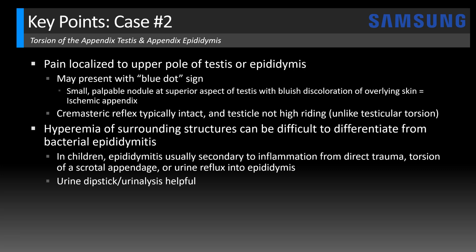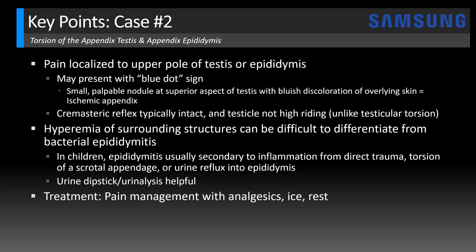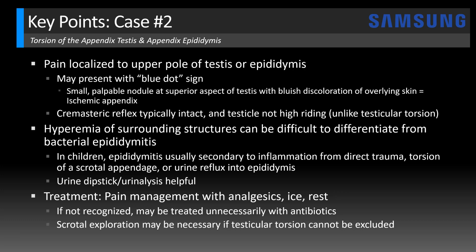A urine dipstick and urinalysis is helpful to differentiate — in both of these cases, both patients had negative urinalysis evaluations, excluding bacterial infection. Treatment is typically conservative with pain management using analgesics, ice, and rest. If this is not recognized and misdiagnosed as bacterial epididymitis, the patient may be treated unnecessarily with antibiotics. There are sometimes cases where clinically and/or radiologically it can be difficult to differentiate from testicular torsion, and in those cases, if there's high concern, scrotal exploration may be necessary.